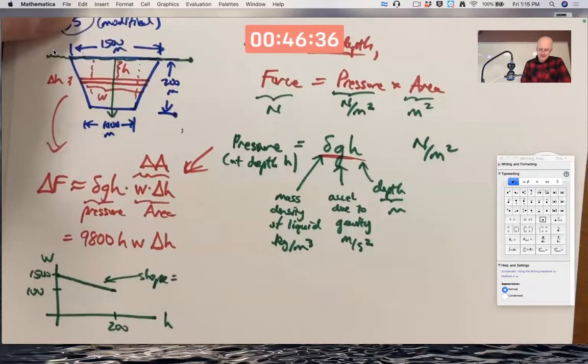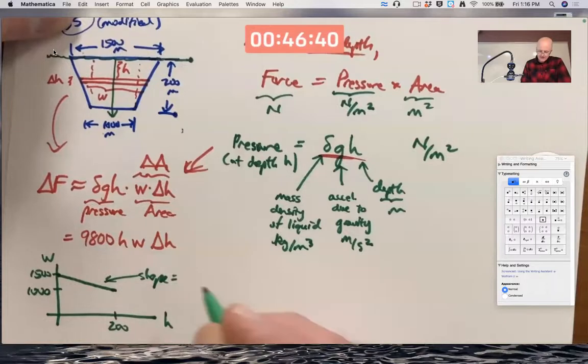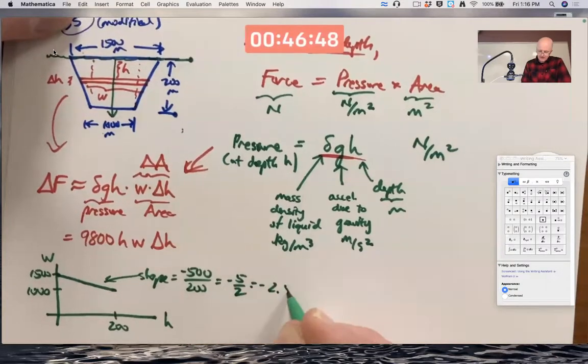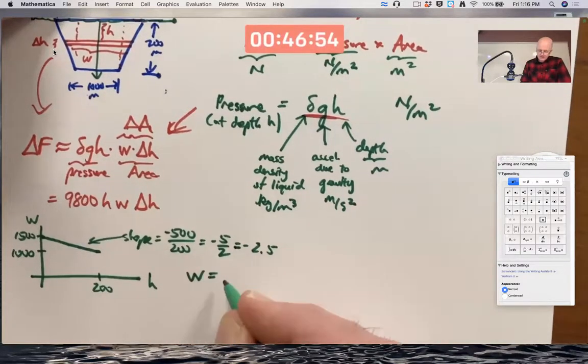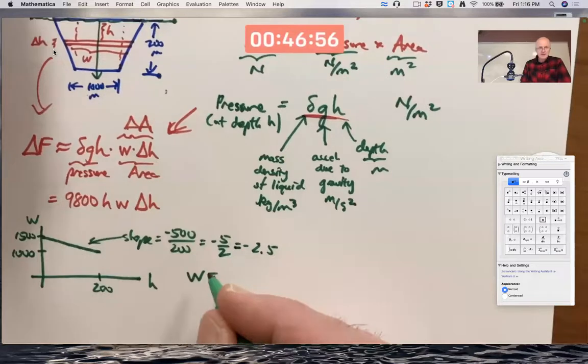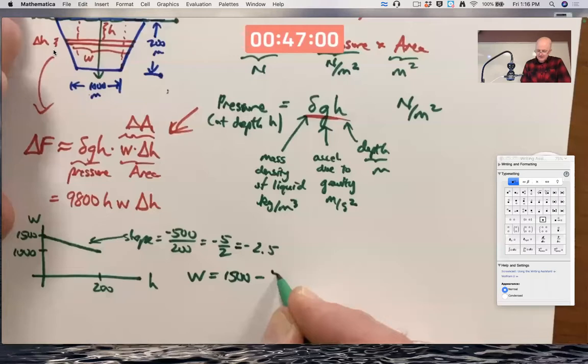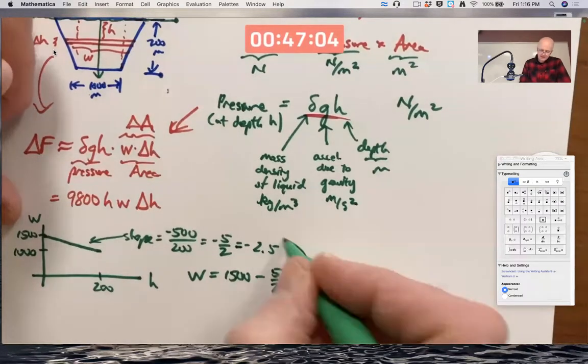What's the slope? Rise over run is going to be, oops, this is 1,000 here. Negative 500 is the rise because it goes down and the run is 200. This simplifies to negative 5 halves, negative 2.5. And so the equation for W as a function of H is going to be intercept 1,500, 1,500 minus 5 halves H. And you can plug that back in here.